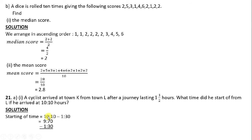So we have 9 hours 70 minutes. From here we can subtract: 70 minus 30 gives 40, and 9 minus 1 gives 8. So the cyclist started off at 08:40 hours in order to reach at 10:10 in one and a half hours.